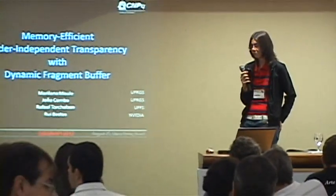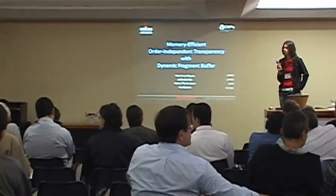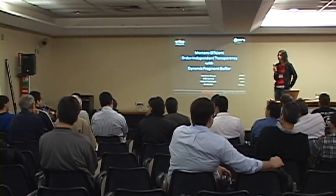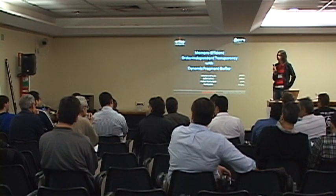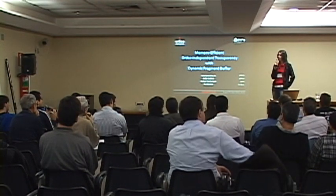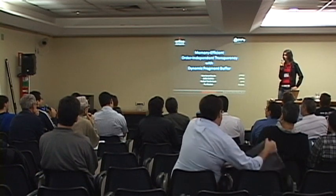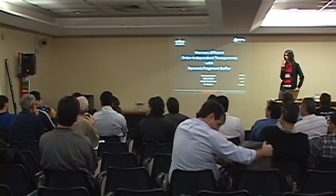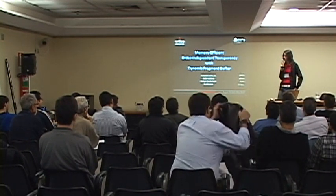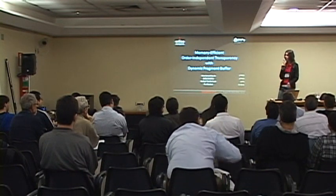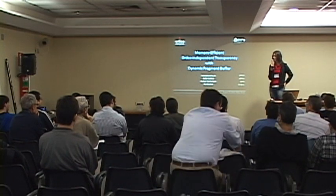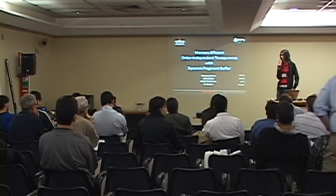Thank you for the presentation. I have a question about the second geometry pass — because there you're figuring out where to place each fragment and then you update a count buffer. How do you guarantee this is an atomic operation? What are you using — shaders or CUDA? We use GLSL shaders. So how do you guarantee two fragments aren't updating the count buffer at the same time? In the Fermi line of NVIDIA, we have hardware atomic operations in the fragment shader, so we use that feature provided by the hardware.